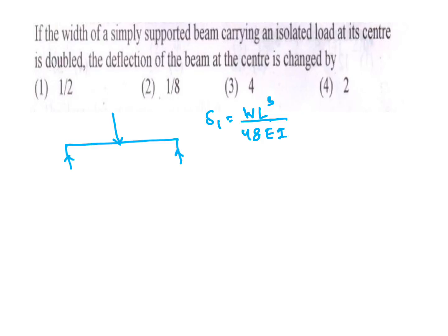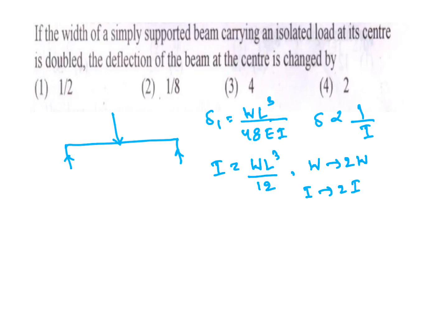Deflection is inversely proportional to I. For a rectangular section, I = wL^3/12 (where w is width). Since only width is changing to 2w, I becomes 2I. Therefore delta becomes half. Delta_2 = (1/2) × delta_1, so deflection is reduced.